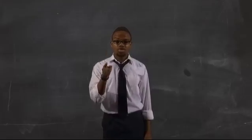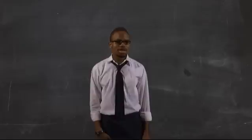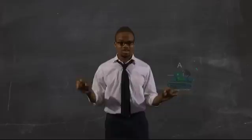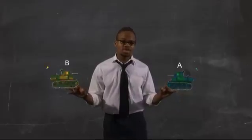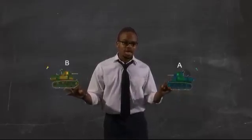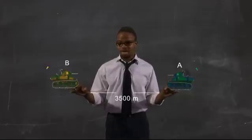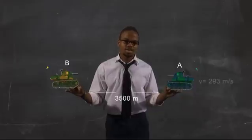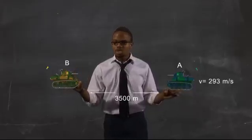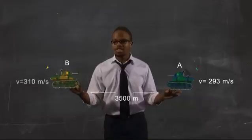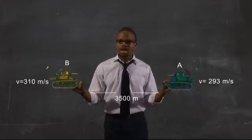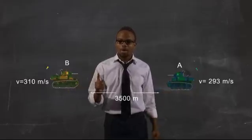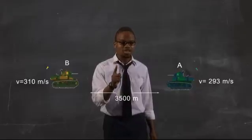Now it's your turn to use these formulas. Let's see if you actually learned anything. There are two tanks — tank A and tank B. The distance between them is 3,500 meters. Ian is in tank A, Omer is in tank B. Tank A shoots its missiles at 293 meters per second, tank B at 310 meters per second. Calculate the angle at which you should fire your missiles to hit the enemy. Whoever manages to shoot the other tank first wins the game.